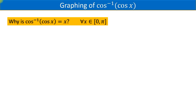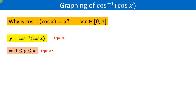While drawing the graph of cos inverse of cos x, the first and foremost question that arises is: when is cos inverse of cos x equal to x? This holds for all x belonging to the closed interval 0 to pi. Let us quickly understand this, then we will draw the graph. Let y equal cos inverse of cos x. This implies y is greater than or equal to 0 and less than or equal to pi, because the range of the cosine inverse function is the set of all numbers from 0 to pi.